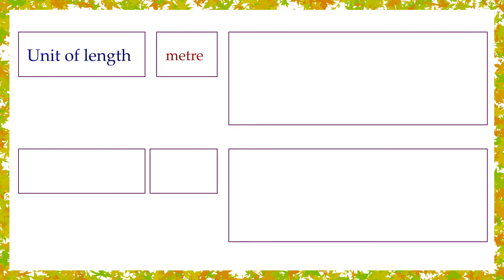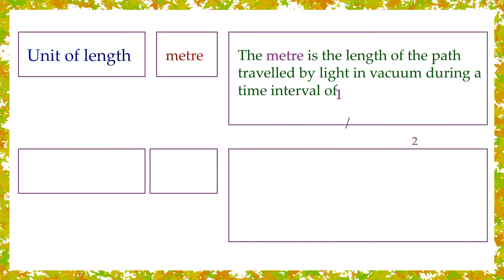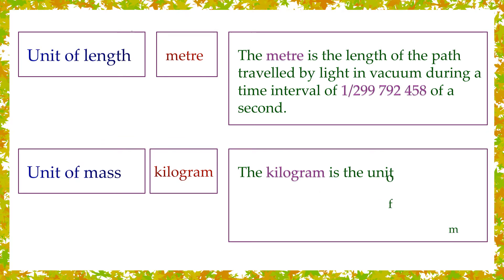Unit of length: meter. The meter is the length of the path traveled by light in vacuum during a time interval of 1/299,792,458 of a second.